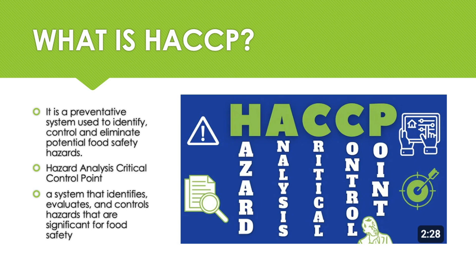A control point is a step in a process at which control can be applied but where loss of control would not result in a risk to health. A critical control point is a step in the process where it is essential to prevent or eliminate a food safety hazard or reduce it to an acceptable level — steps where there are significant hazards that are critical. If not controlled, they could make the final product unsafe and cause harm to the consumer. Steps that are not critical, that is, control points, are still important and require control. Critical steps need extra control through the HACCP system. No further step in the process will control the hazard. The team must identify critical control points — these are points where the hazard must be controlled or it will present a risk to the end user.